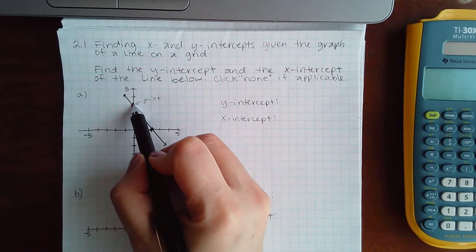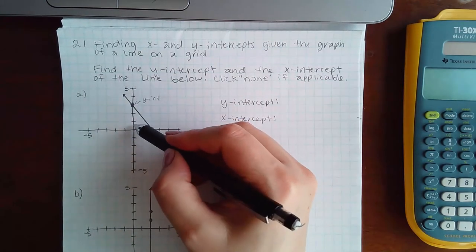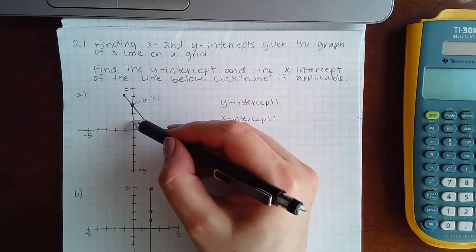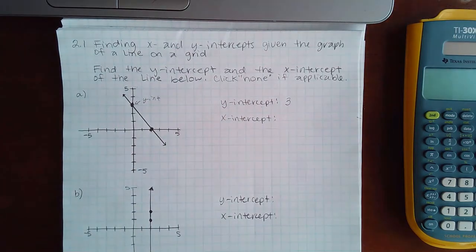And what value is that? If this is 5, then 1, 2, 3, 4, 5, each of these markings is 1 unit. So then I would count 1, 2, 3. So my y-intercept is 3.